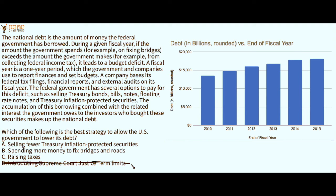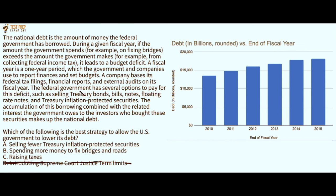Let's look at A and B. Selling fewer treasury inflation-protected securities — the passage says the federal government has several options to pay the deficit, and one of those options is selling treasury inflation-protected securities. Without knowing anything about that topic, it makes sense that selling fewer of them is not going to be the best strategy to lower the debt.